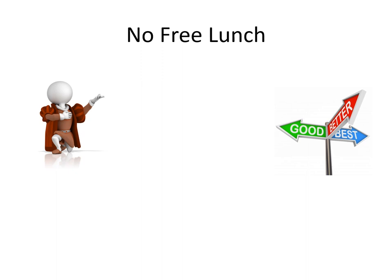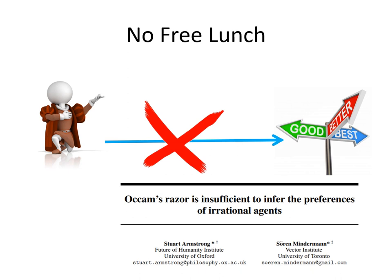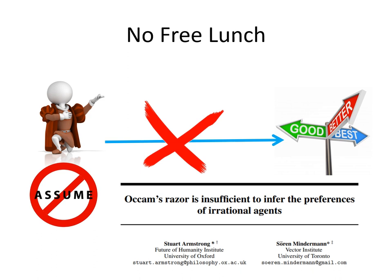The no free lunch theorem for value learning is quite simple. We have the behavior of an agent or human and we'd wish to infer what their preferences are from that. Unfortunately, we can't. We cannot go directly from the behavior to the preferences without making strong assumptions.